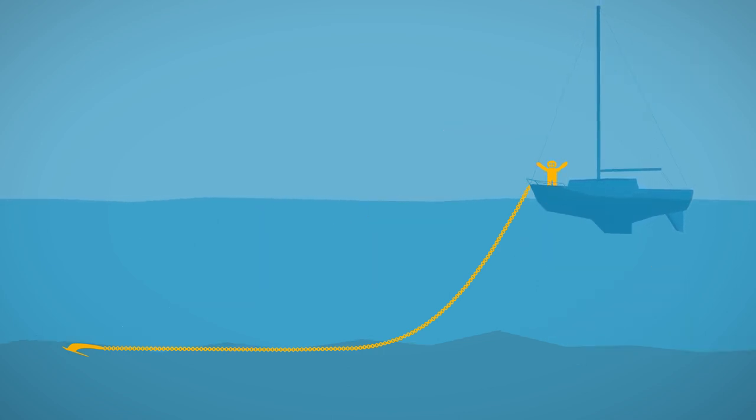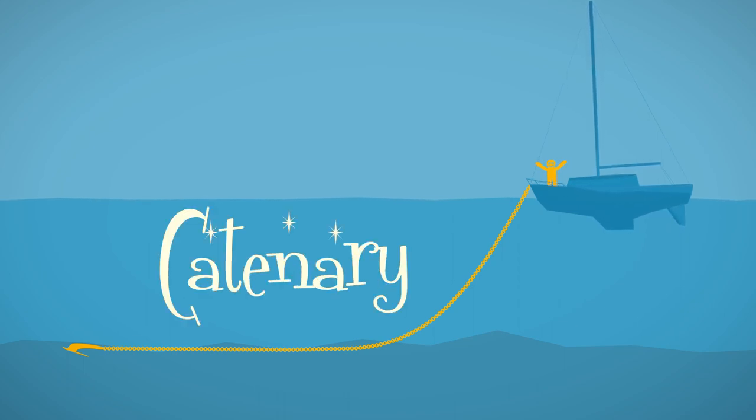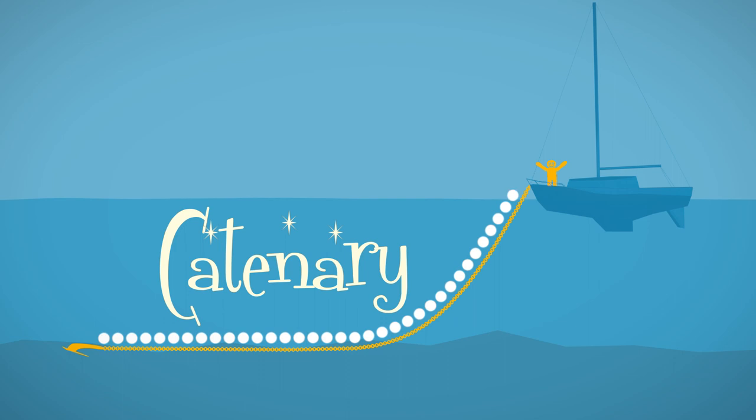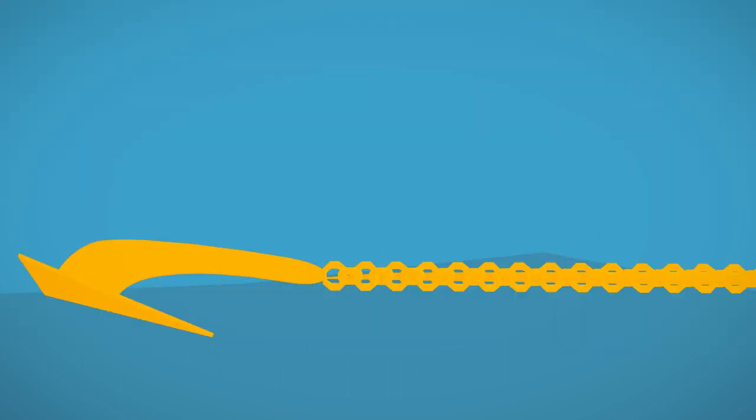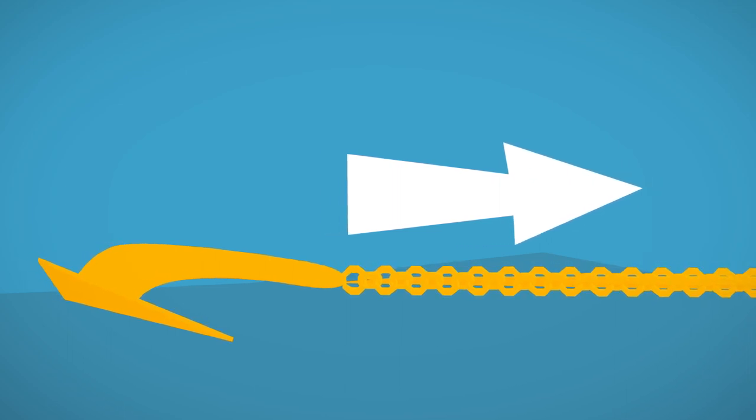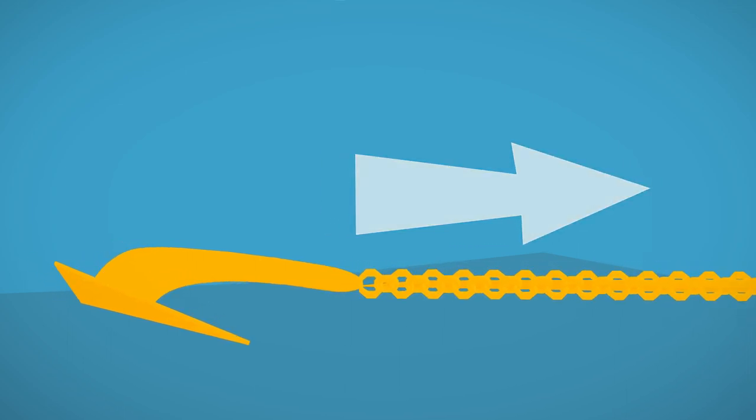Chain is more effective at keeping the anchor set because of something called catenary. Catenary is the curve the rode makes through the space between the anchor and the boat. If it has a large curve and actually just sits on the bottom for most of that distance, then the force pulling on the anchor is always horizontal and digs deeper. Since chain is heavier, it tends to want to sit on the bottom.